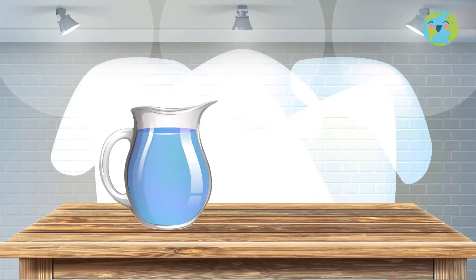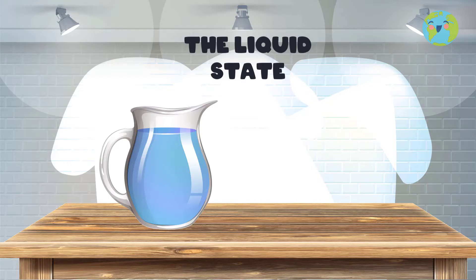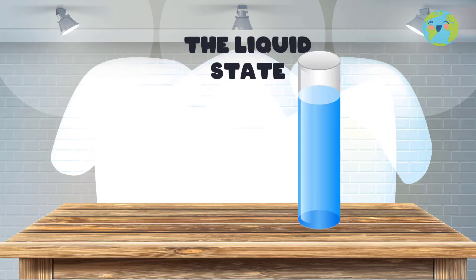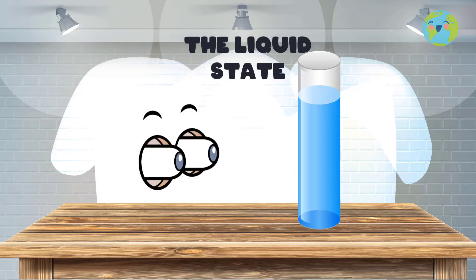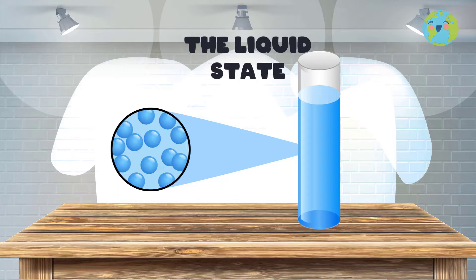Here we have a jug with water. This water is in the liquid state. This is the first state of matter and is characterized by adapting to the shape of the container that contains it. For example, this water has the shape of a jug, but if we pour it into a long tube like this one, it will now have an elongated shape. In this state, the particles that compose it are a little separated and can move.